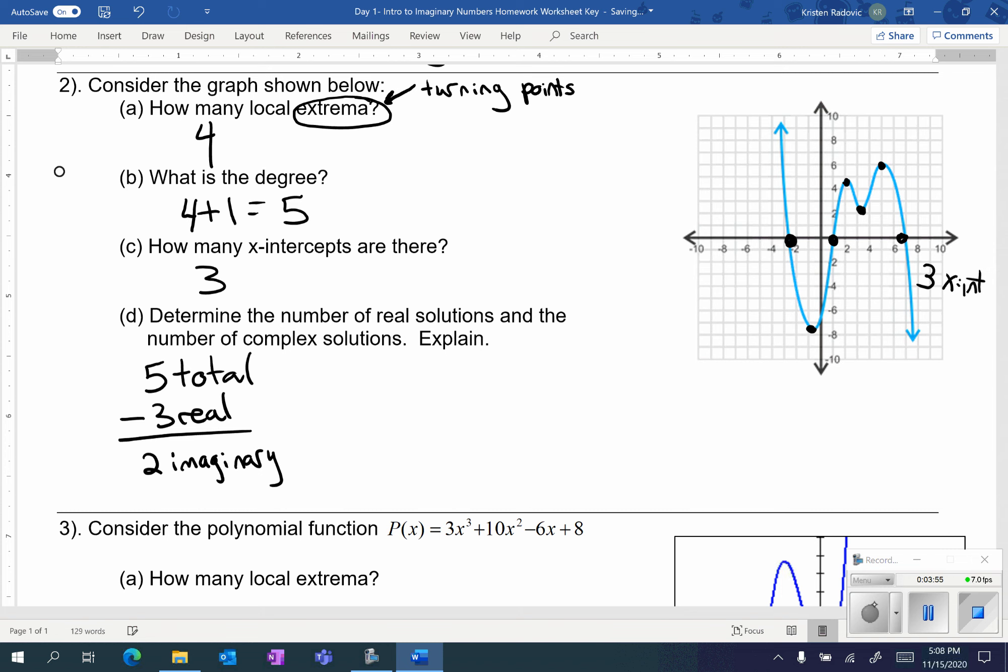So we see three x-intercepts and there are two x-intercepts that we don't see. Now, this problem tells you to explain, so make sure you write a sentence. Try to think of what an appropriate explanation would be for this.